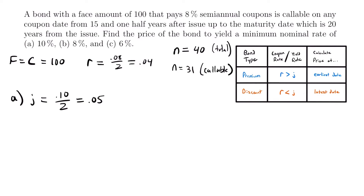To determine which value of N to use for Part A, where J equals 0.05, we compare it to the coupon rate. The yield rate is greater than the coupon rate: 0.05 is greater than 0.04. According to our table, this means the bond is being purchased at a discount. Therefore, we want to calculate the price at the latest date possible, which gives us the lowest price. So we'll use N equals 40 when calculating the price of this bond.